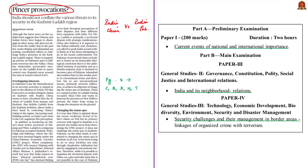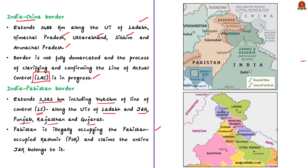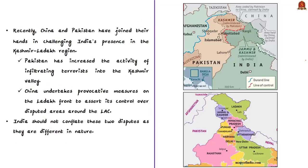The syllabus relevant to the analysis of this news article is given here for your reference. We have given two maps: the first shows the status quo of India's border with neighbors, and the second shows India's perception of the border. Here, neighbors refers to the countries of China and Pakistan.